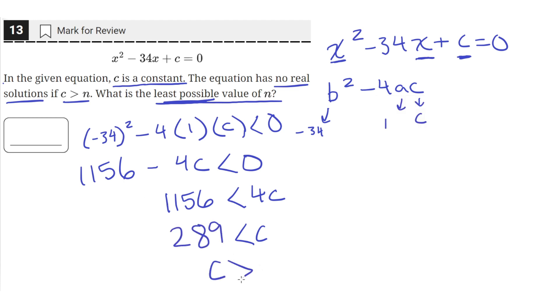So this means that c has to be greater than 289. Because if c is greater than this number, this makes the discriminant negative.